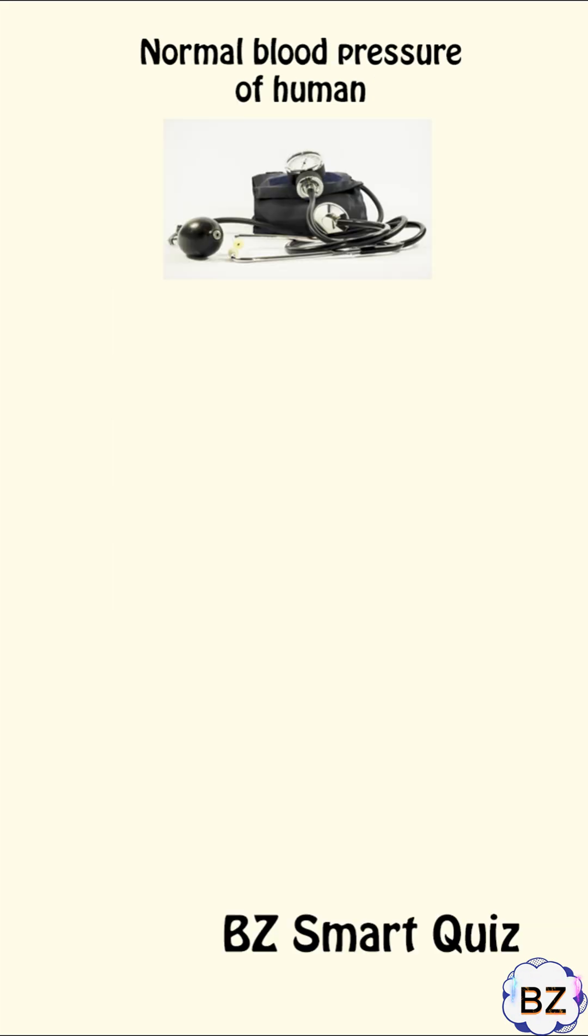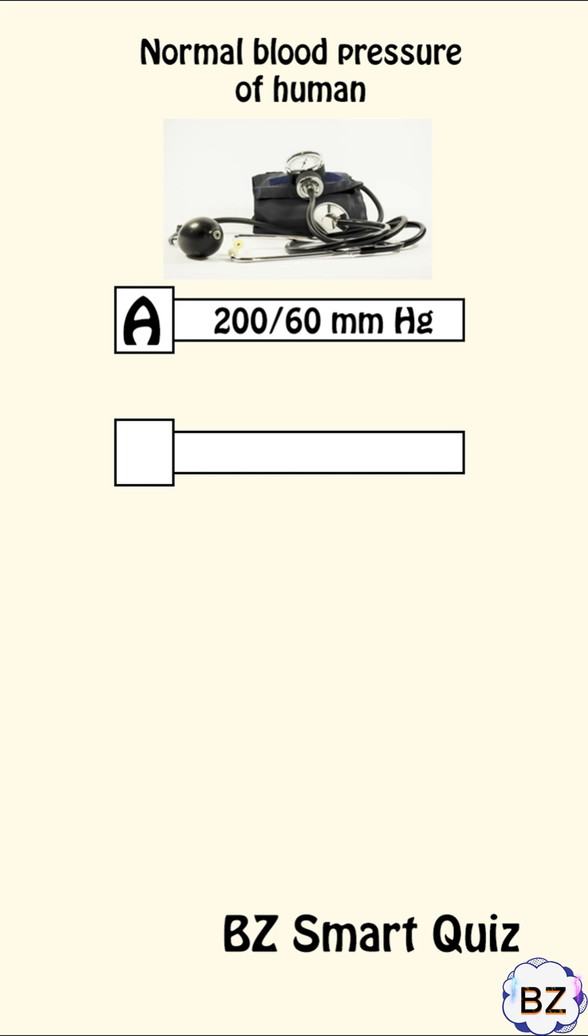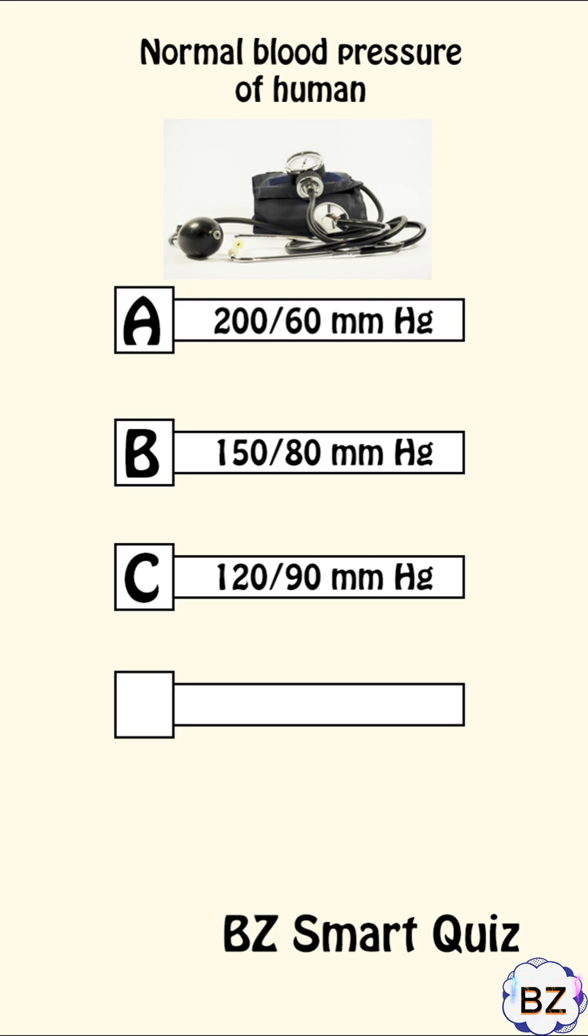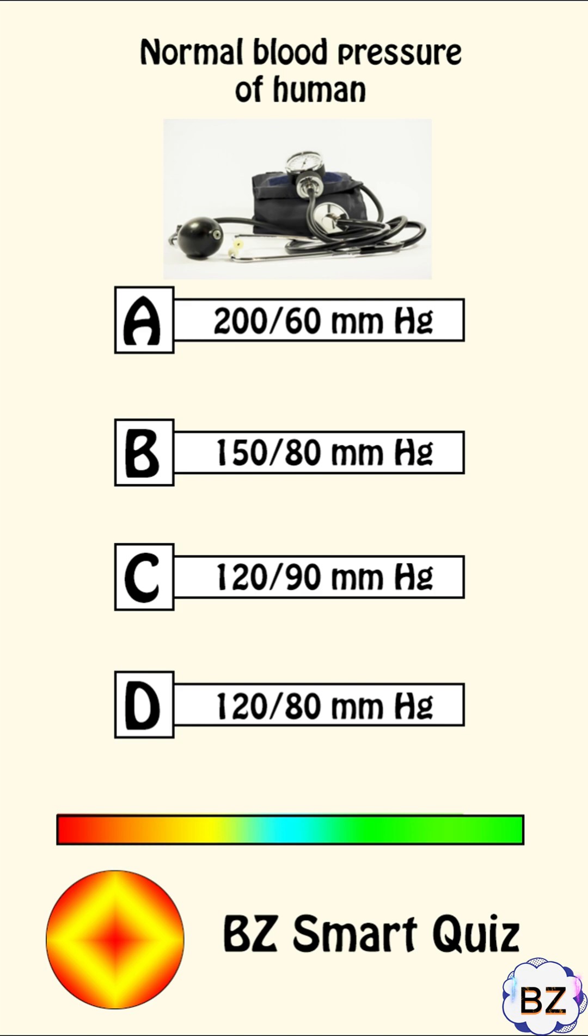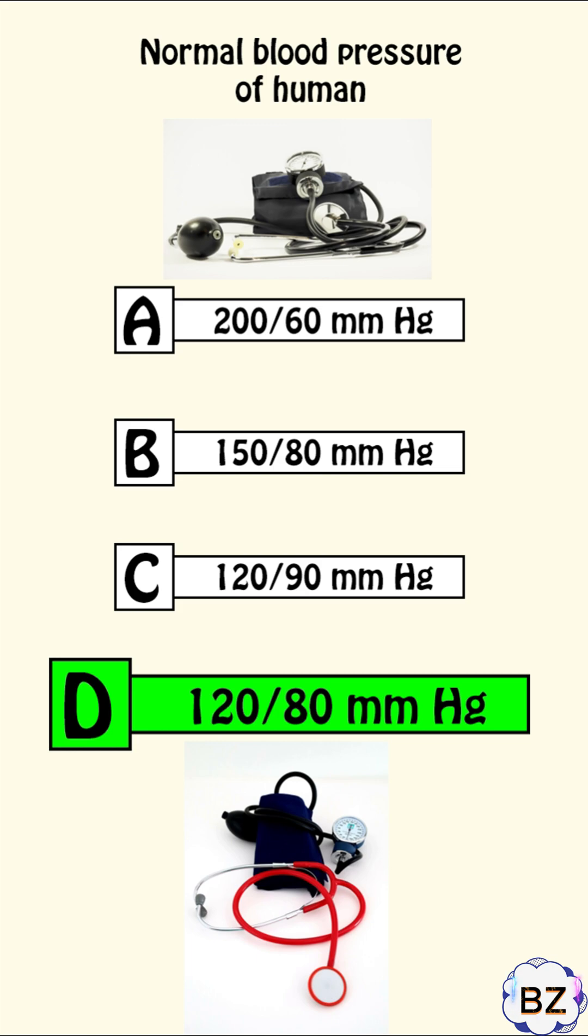Normal blood pressure of human: 260 mm of mercury, 150/80 mm of mercury, 120/90 mm of mercury, 120/80 mm of mercury. Correct answer: D. 120/80 mm of mercury.